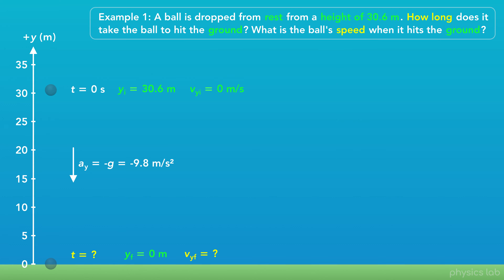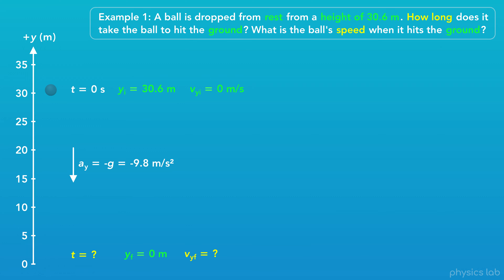Also, when a question wants us to find a value when the object hits the ground, it's asking about the instant it hits the ground, or the instant before it hits the ground. We're not going to say the ball stops when it hits the ground and the final speed is 0. The question is focusing on the projectile motion of the ball, so we're looking for the time and speed when the ball has the same y position as the ground, which is 0 meters. Don't think about the physical interaction with the ground — just focus on the projectile motion.